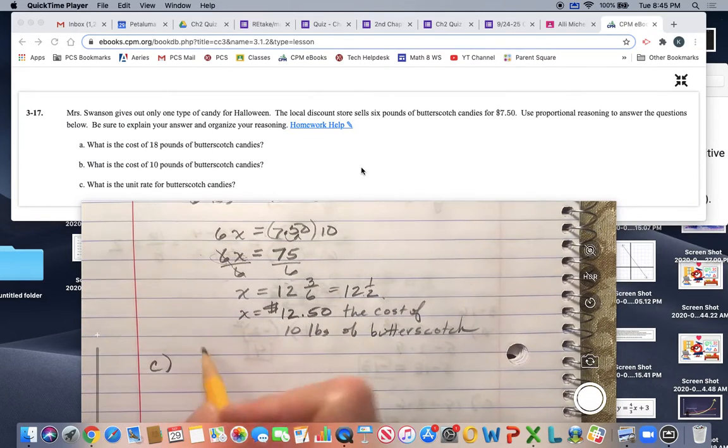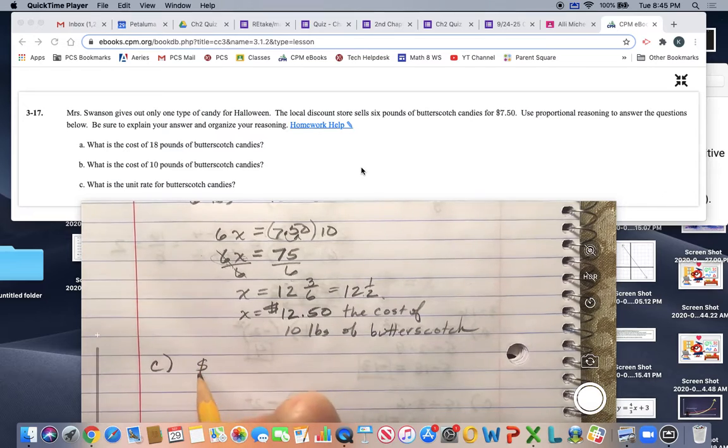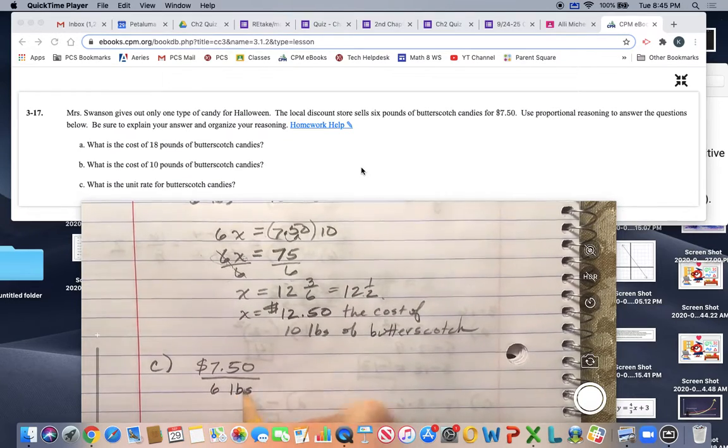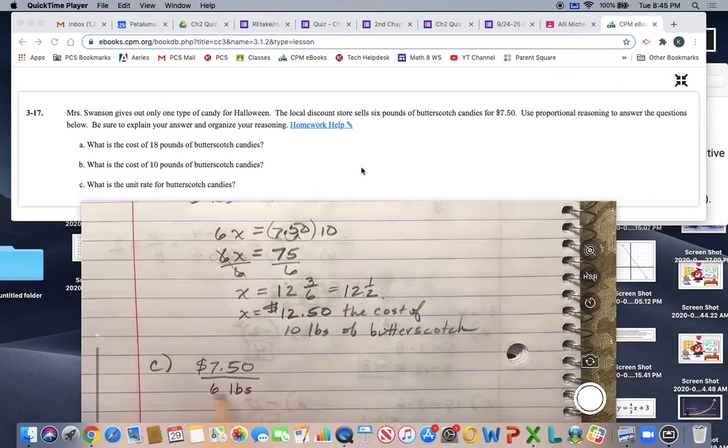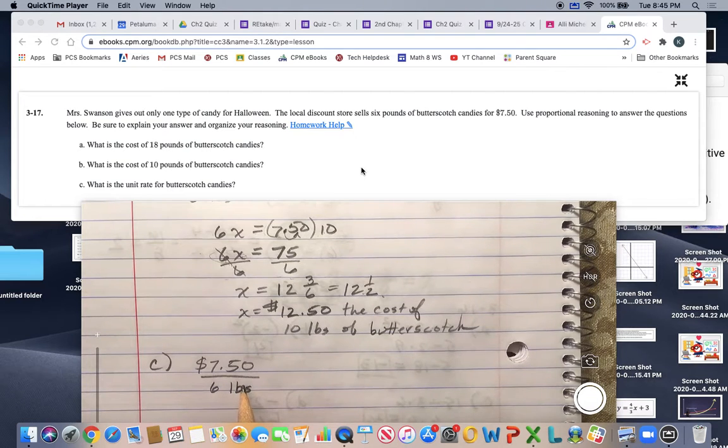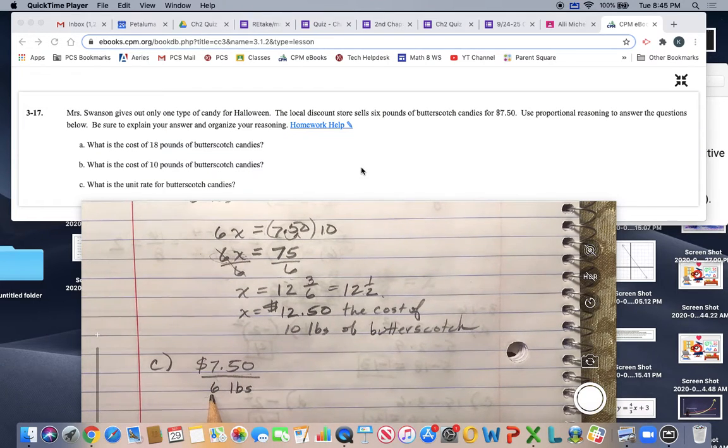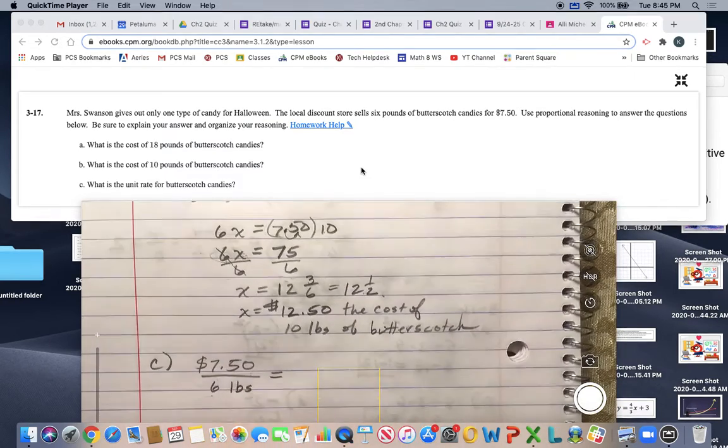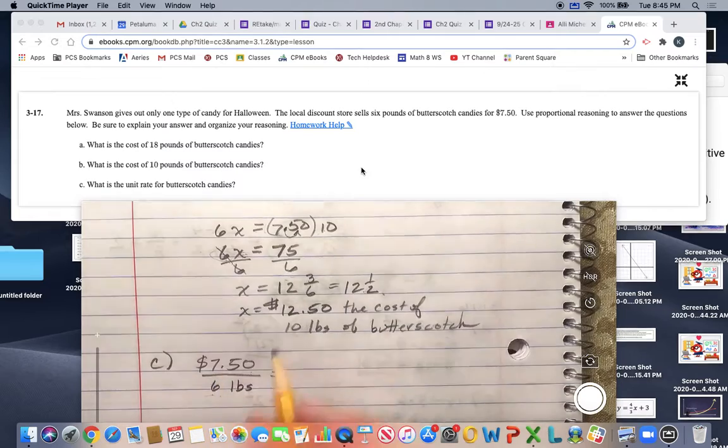Okay, we know from our original information that it'll cost us $7.50 if we have 6 pounds of butterscotch candy. The easiest way to find the unit rate is to divide $7.50 by 6, and that should give us what it costs for one pound. So let's divide.